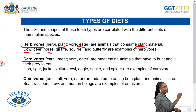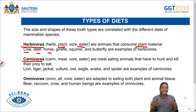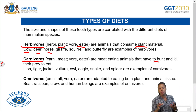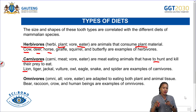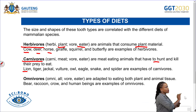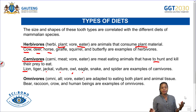Carnivores are meat-eating animals that hunt and kill prey to get food. Examples include the lion, tiger, jackal, vulture, owl, eagle, snake, and spider.